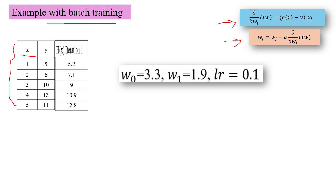For the given w0 and w1, we compute the h(x) values for the given x values. For example, h(x) = 5.2 is obtained as 3.3 + 1.1×1 = 5.2 (using w0 + w1·x). That is the general formula: y = w0 + w1·x, since we have only one dimension.